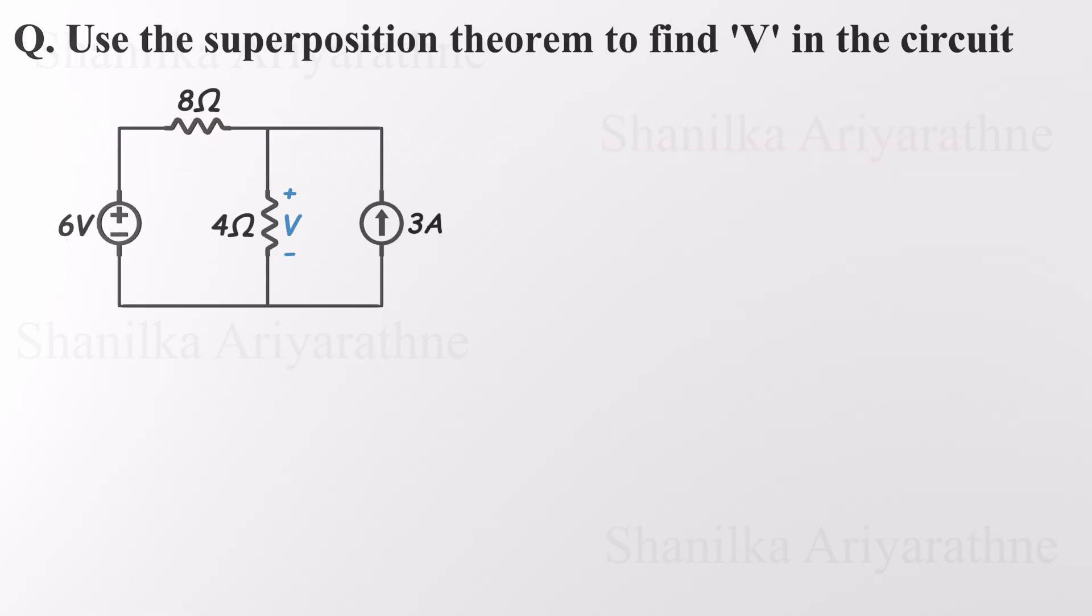Let's walk through a real example. Suppose we want to find the voltage across a 4-ohm resistor in a circuit that has both a voltage source and a current source. Now technically, we could solve the entire circuit at once using Kirchhoff's laws, but that can get pretty messy. Luckily, superposition gives us a smarter path. Instead of juggling everything at once, we break it down and handle one source at a time. So that's what we'll do.